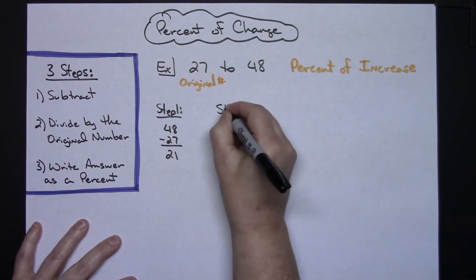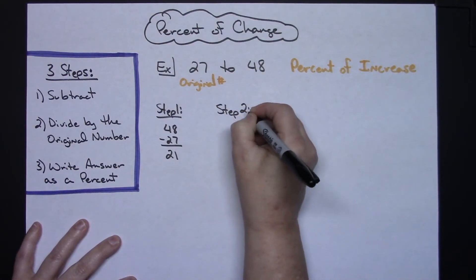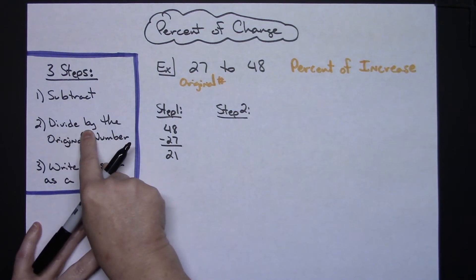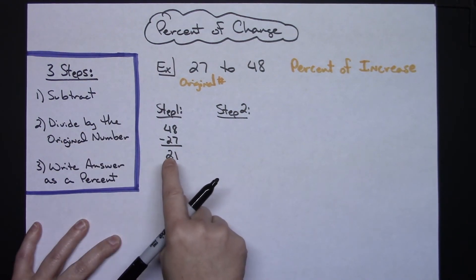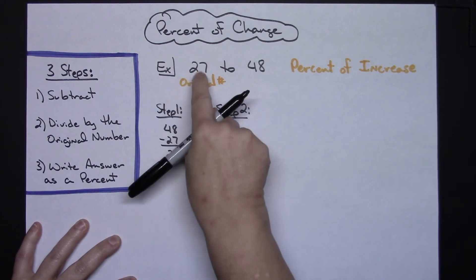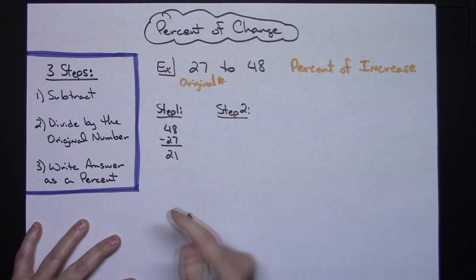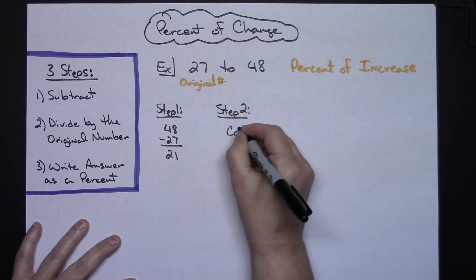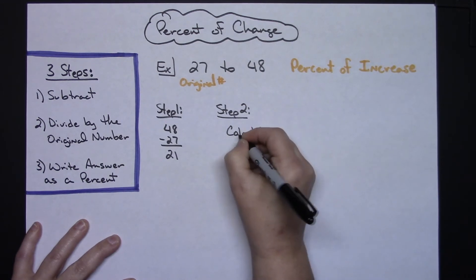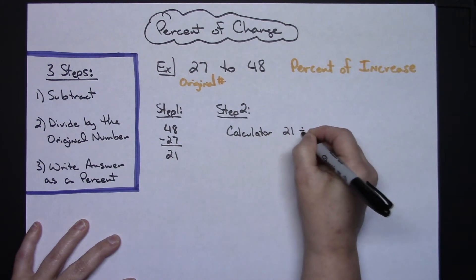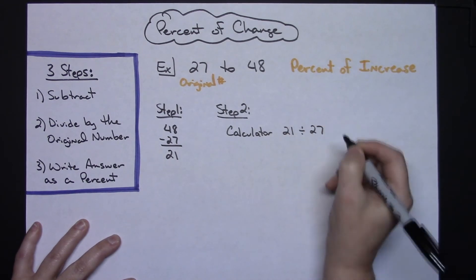Now step two says to divide by the original number, which means that I take 21 and divide by 27. If you are doing this in a calculator, then you're going to put the 21 in first and you're going to hit divide by 27.